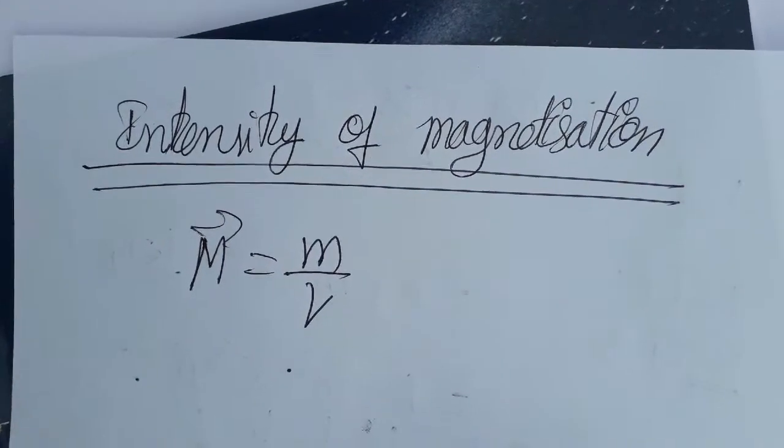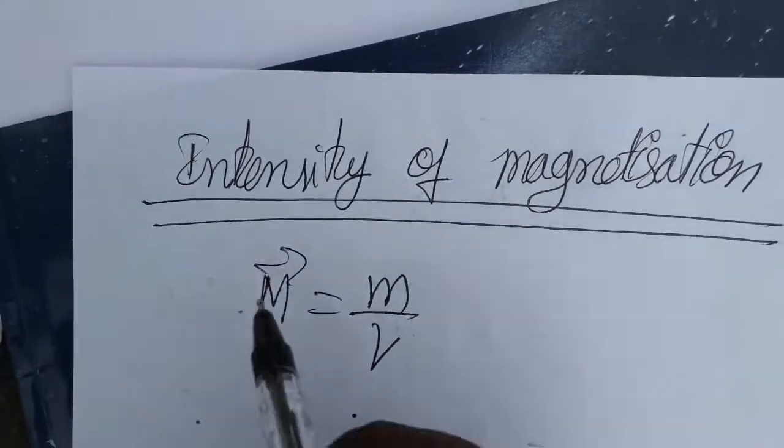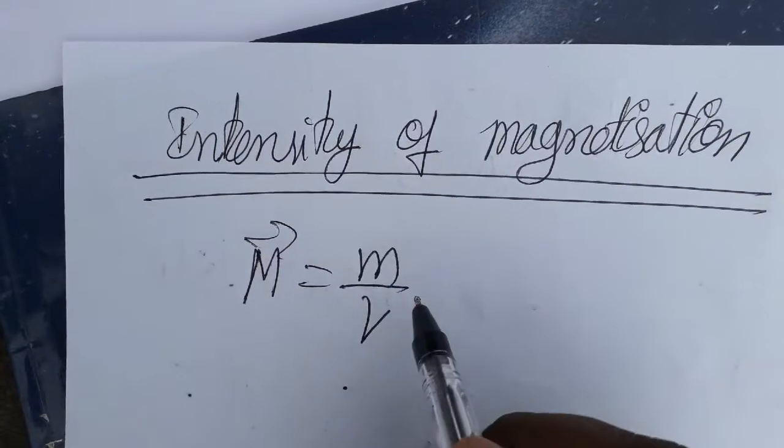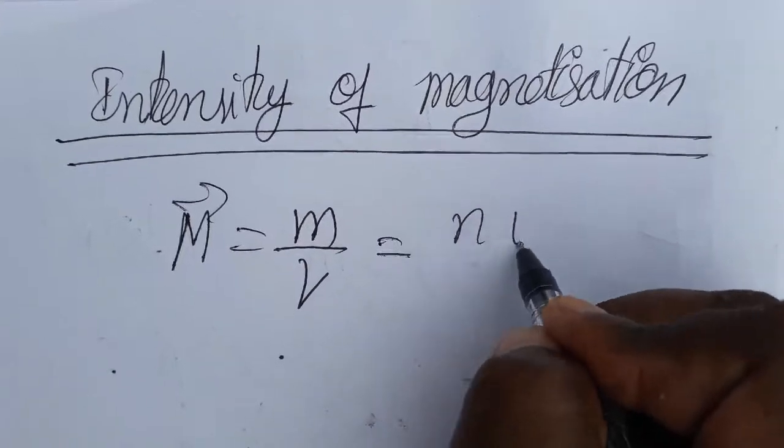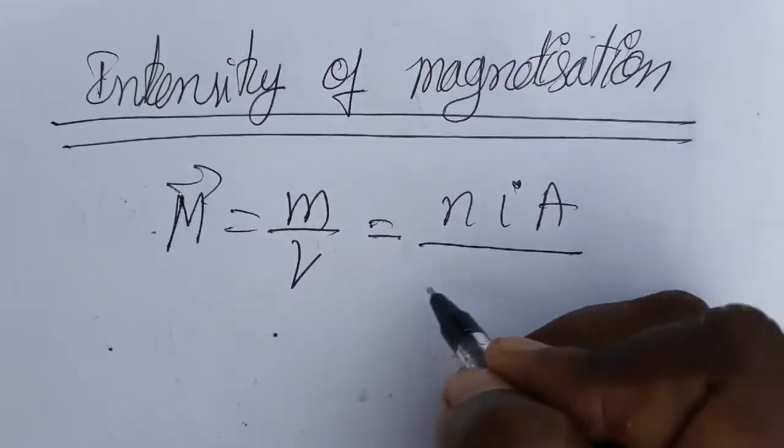My friends, today we are going to learn intensity of magnetization SI unit and dimensional formula. Intensity of magnetization is magnetic dipole moment per unit volume. What is magnetic dipole moment? m is NIA, which is magnetic dipole moment, and volume...